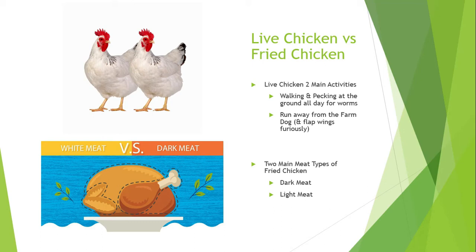Then you let the dog out. The dog runs at the chicken and the chicken tries to run away — it's flapping its wings furiously, creating a lot of commotion. Those are its two main activities: walking and pecking at the ground, and having a furious tantrum with the dog.